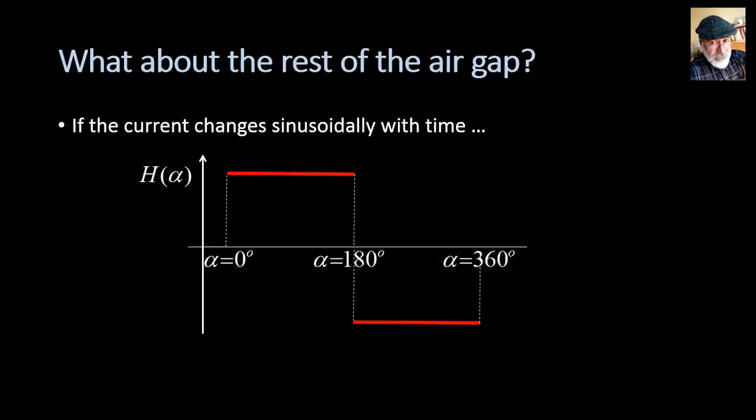What would have happened if the current was not constant? What if that current was changing sinusoidally with time? Well, as the current decreases, so does the magnetic field everywhere in the air gap. At one point, the sinusoidal current is zero, and so is the magnetic field. And a fraction of a second later, the current is reversed, and so is the magnetic field. We have a magnetic field in the air gap that is pulsating. Its space shape is still square, but it's changing with time, pulsating sinusoidally.